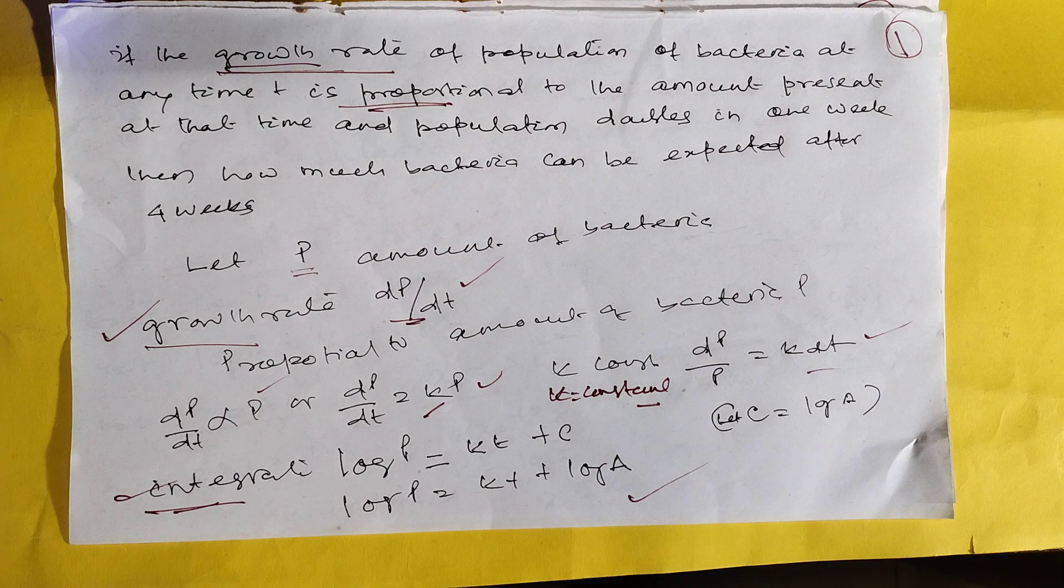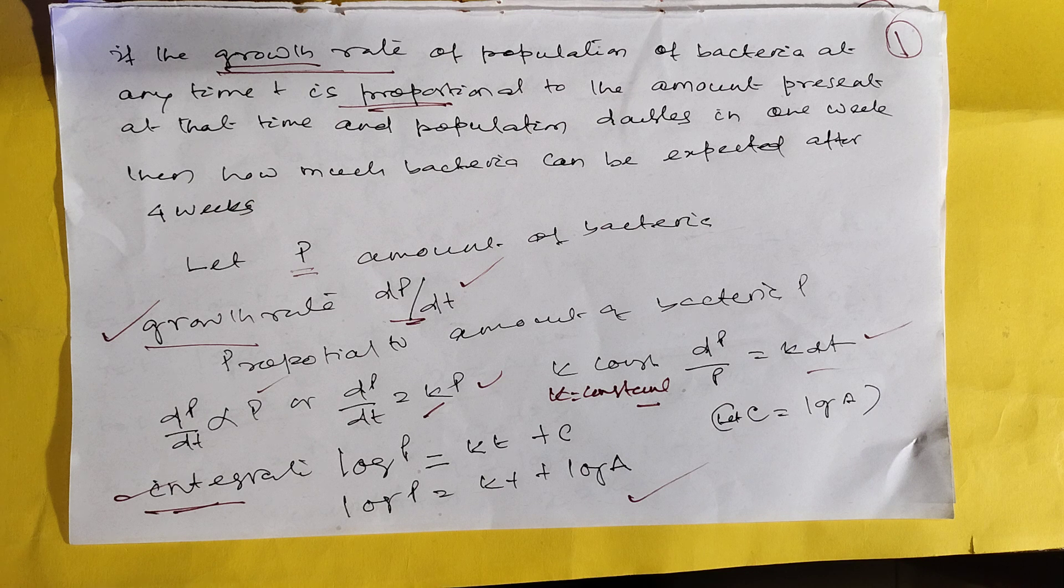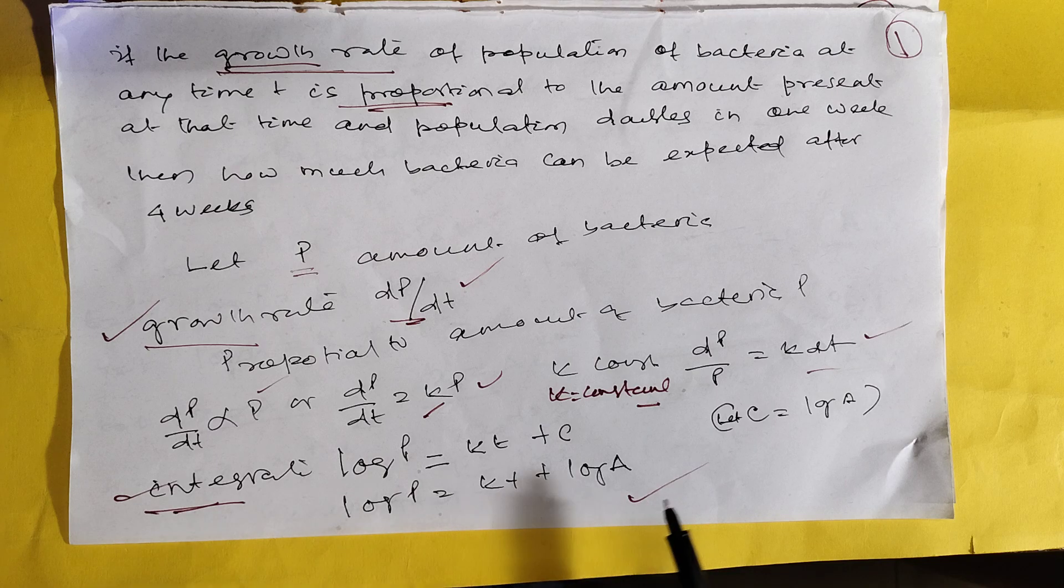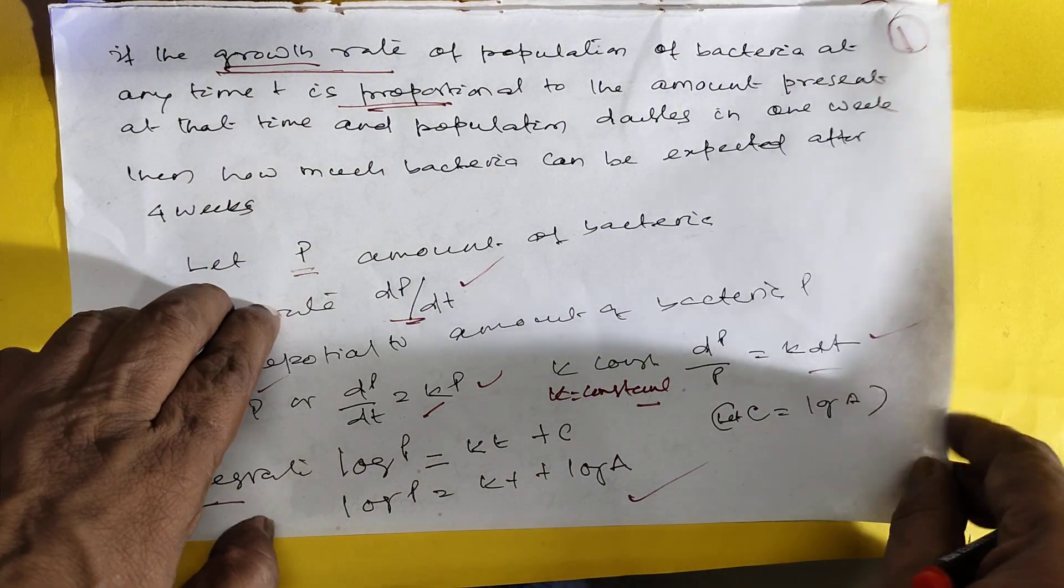This is a simple formula. P is the amount of bacteria. Growth is dP by dt equals dP by KP. Put it dP by P is equal to K dt. And this is our integration process. It is coming and here the constant is log F, we choose it.